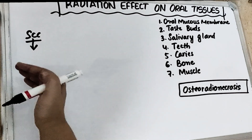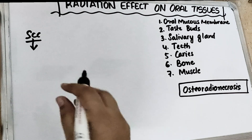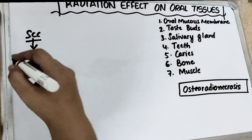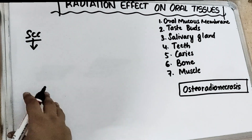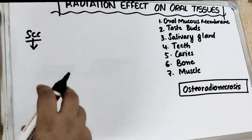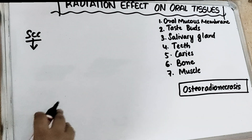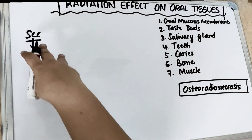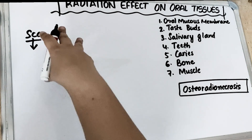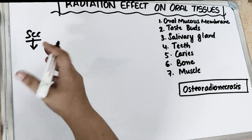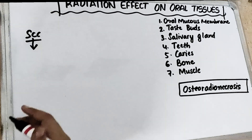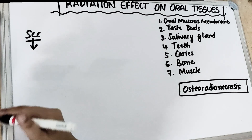In case of advanced lesions, deeply invasive lesions which cannot be treated via a surgical approach — for example, if the tumor is present at the nasopharynx, if the tonsil is involved, or if the tumor involves the soft palate or hypopharynx — in all these areas where we cannot use a surgical approach, we can do radiation therapy.